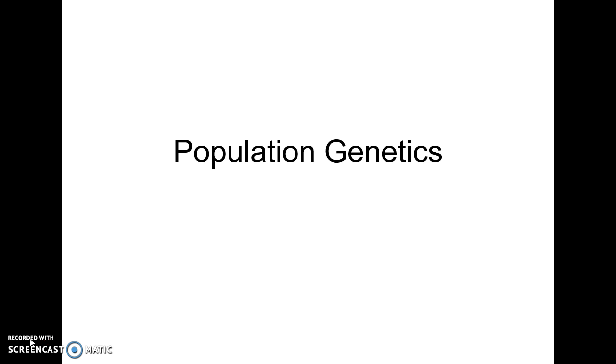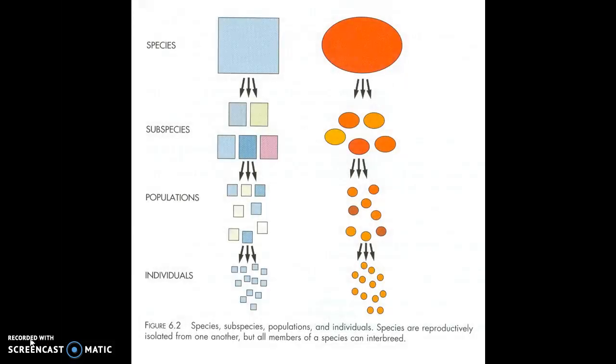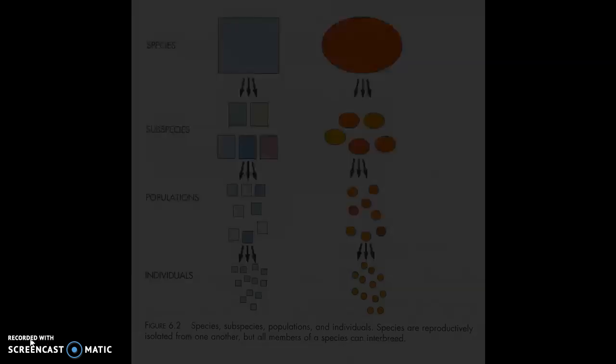Evolution is change in allele frequency from one generation to the next. Remember, alleles are the genes that we inherit from our parents. We study changes in allele frequencies by looking at population genetics. A population is a group within which one is likely to find a mate, while a species — as you can see up there — is a group of individuals that can interbreed. A population is a much smaller group.